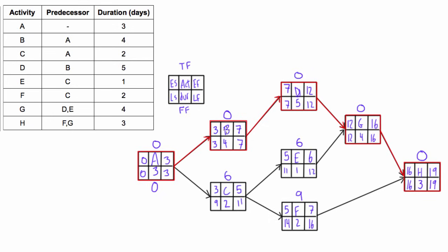For activity B, its free float would be the earliest start of its successor, 7, minus its own early start minus its own duration: 7 minus 3 minus 4, that gives us 0. Same for activity D: 12 minus 7 minus 5 gives us 0. And the free float of activity G: 16 minus 12 minus 4 gives us 0. Activity H doesn't have any successors, but its total float is 0, so its free float can't be greater than 0 — its free float is 0.